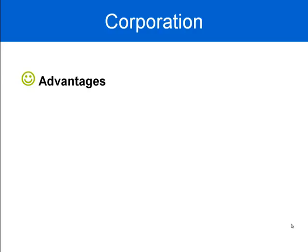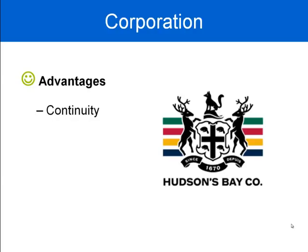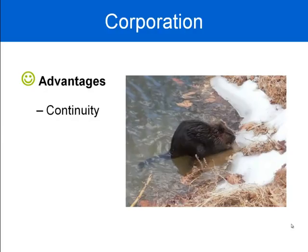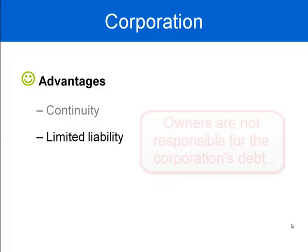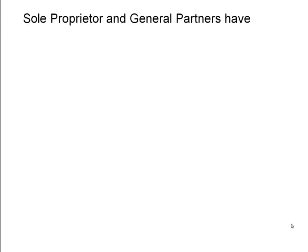One advantage of a corporation is continuity. A corporation acts as if it were a human, but it's a legal human — not a live human — so it can last forever. Hudson's Bay Company is the oldest corporation in Canada, established in 1670. The company started out trapping beavers in Canada to make fur coats in Europe. Today that corporation still exists, but it has moved into retail.